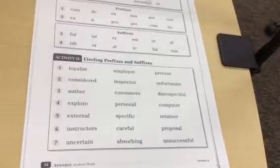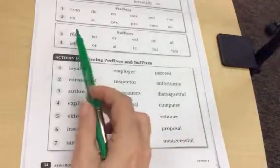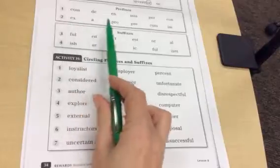Alright, so now we're going to take everything we've learned and we're going to try and figure out some pretty long words. So remember, the first thing that we do is we look for prefixes. So we can look here in your folder or on the anchor chart.